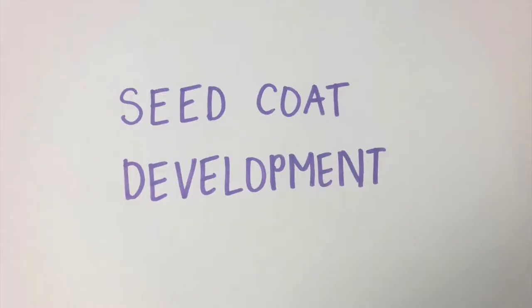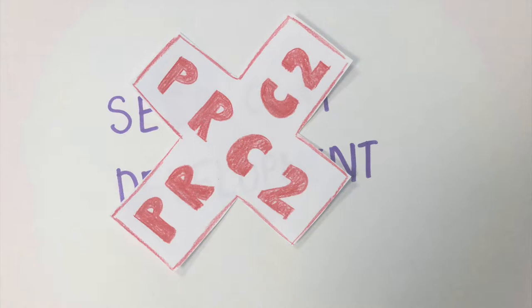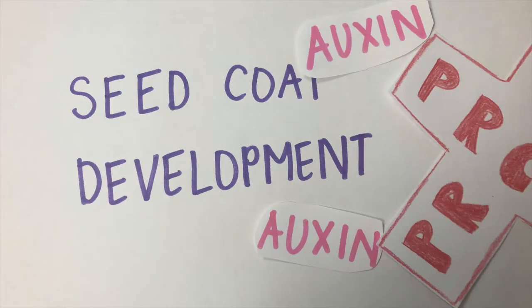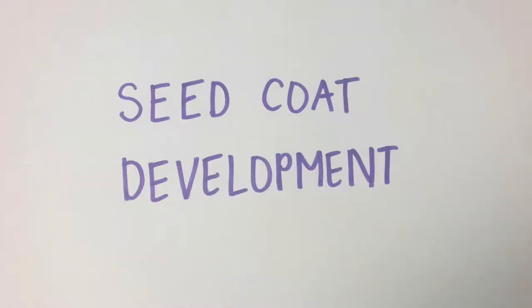Seed coat development is not a part of the fertilization process, but is tightly linked. The signal that initiates seed coat development originates in the endosperm. There is no cytoplasmic connection between the seed coat and the endosperm, so any signals from the endosperm to the seed coat must be able to cross membranes, like signaling peptides or hormones. In the integument, PRC2 coating genes block the initiation of seed coat development. Auxin can remove PRC2 function. It's still not understood how auxin regulates PRC2 function, but it is known that auxin essentially removes inhibition and allows seed coat development to occur.